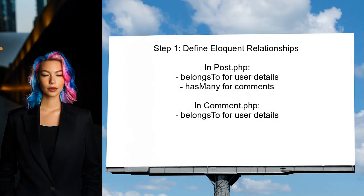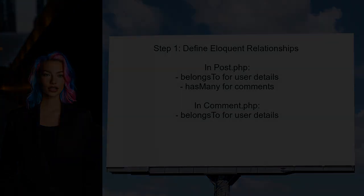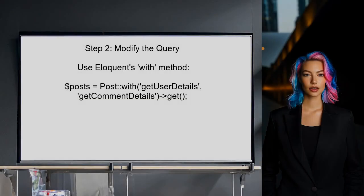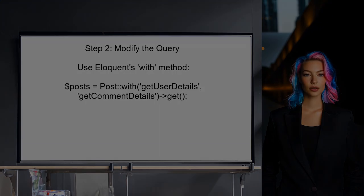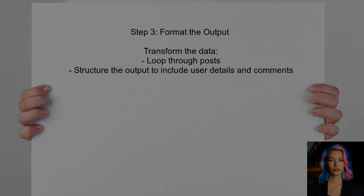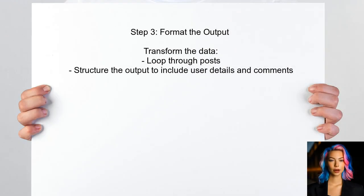To achieve the desired nested JSON structure, the user should first ensure that the Eloquent relationships are correctly defined in the models. This includes the relationships between posts, comments, and users. Next, the user should modify the query to include the necessary relationships. This can be done using the `with` method in Eloquent to eager load the related models. After retrieving the posts with their related comments and user details, the user can format the output to match the expected JSON structure.